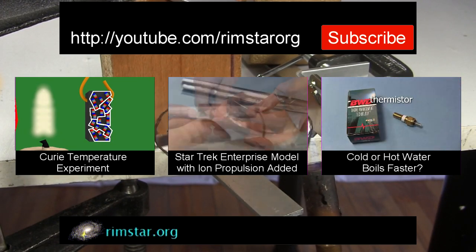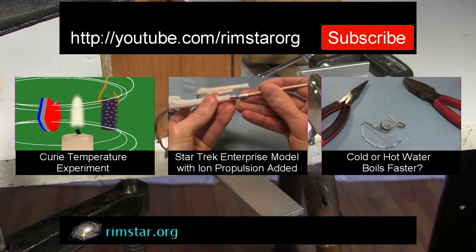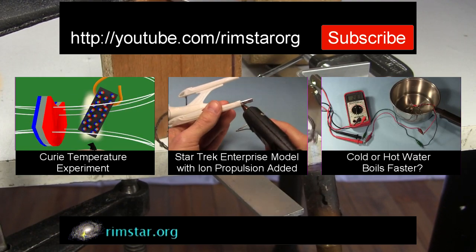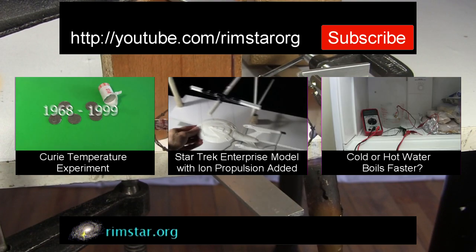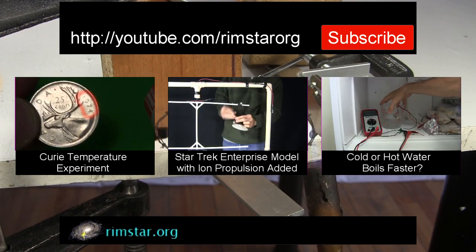That includes one about a much simpler to make Curie temperature experiment, another where I add ion propulsion to a Star Trek Enterprise model, and an experiment to test which boils faster, hot or cold water.